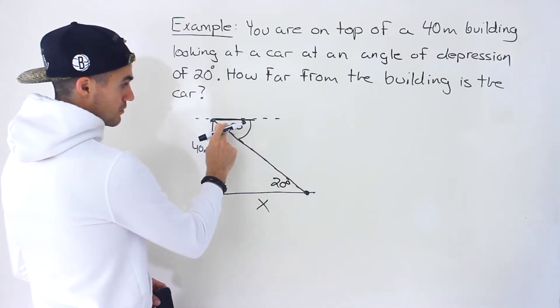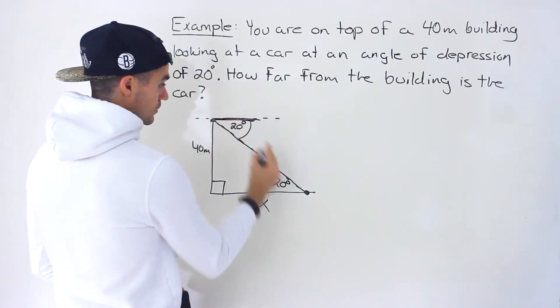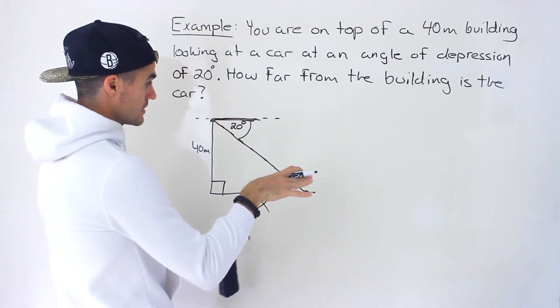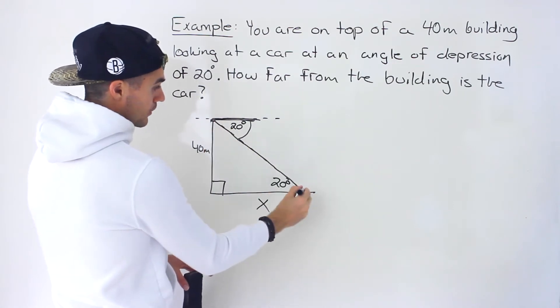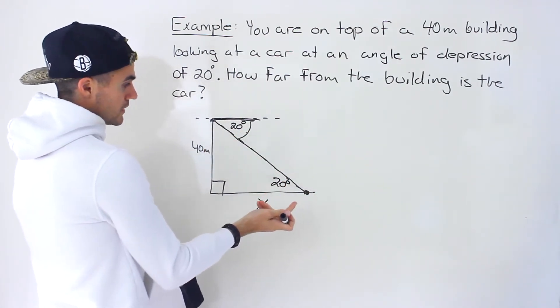Because with the z pattern, this angle and this angle are both the same because this horizontal and this ground are parallel sides. So then a slant line going through it means this angle and this angle are the same. So that's one way to do it.